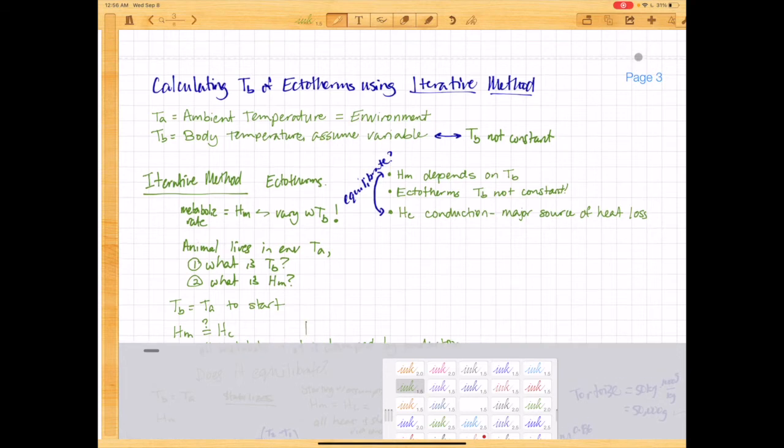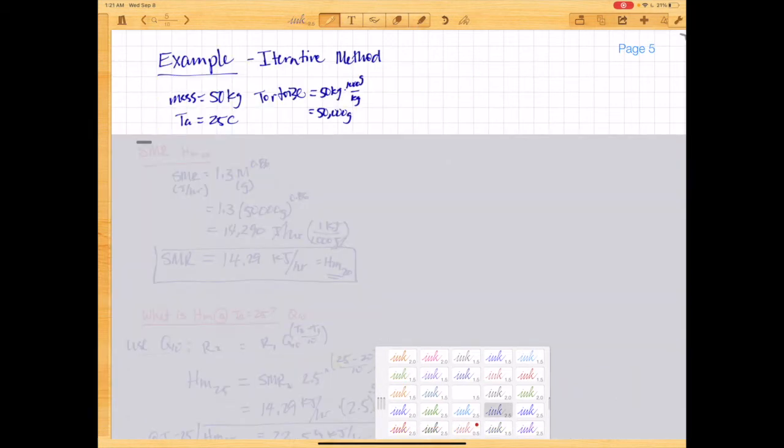So here's an example of the iterative method. Let's start off with a 50 kilogram tortoise who lives at an ambient temperature of 25 degrees Celsius. So 50 kilograms converted to grams is 50,000 grams, because there's 1,000 grams per kilogram. You just would cancel this out. So it's 50 times 1,000.